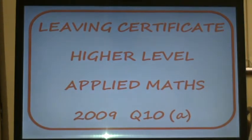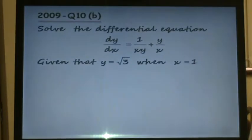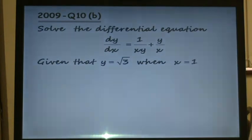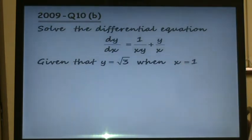Here we're going to look at a Leaving Cert higher level applied maths question. The question we're going to look at is question 10a which came up in 2009. We're asked to solve the differential equation dy/dx equals 1 over xy plus y over x, given the boundary conditions y equals root 3 when x equals 1. With these boundary conditions we can find an exact solution to this first order differential equation.